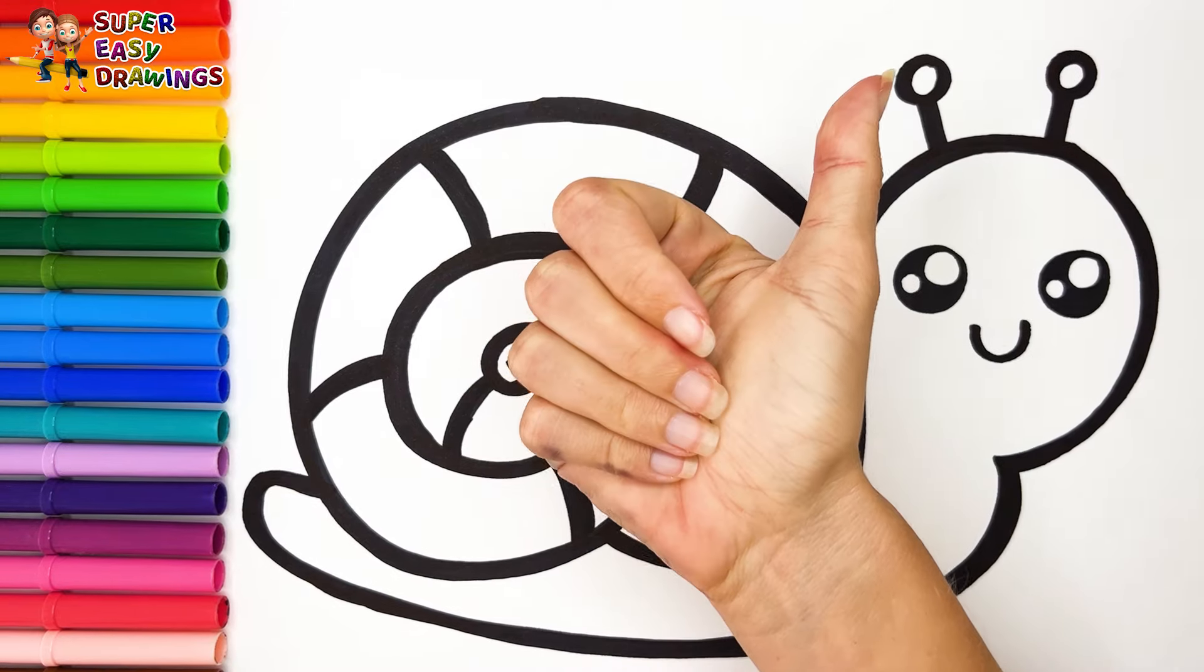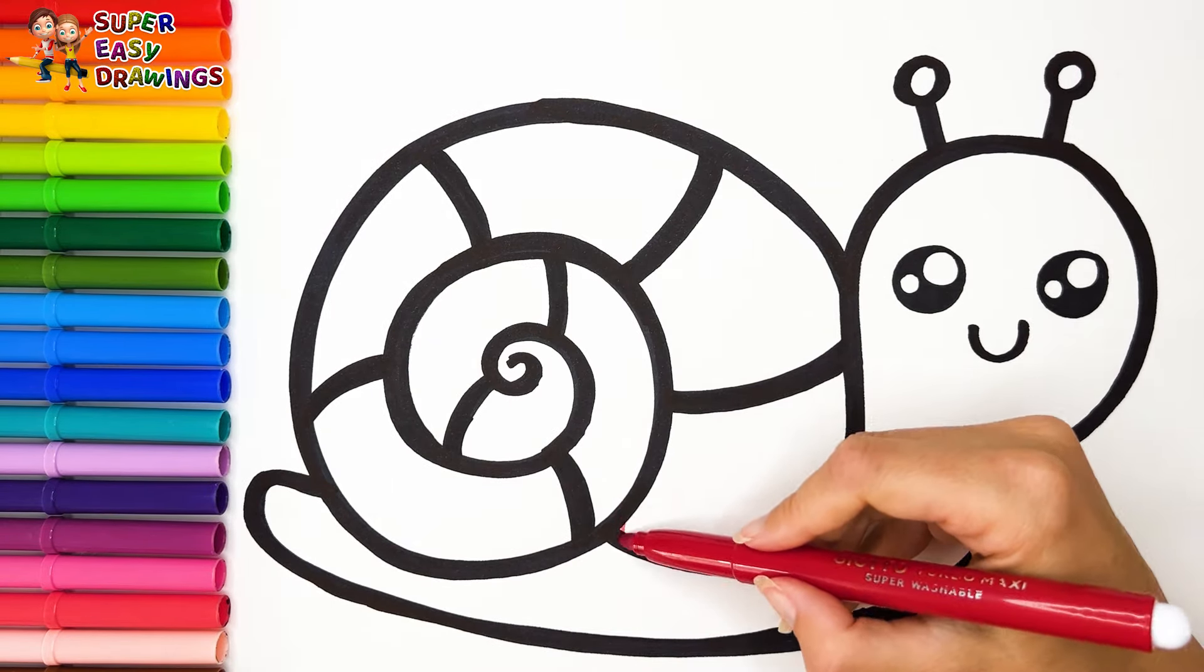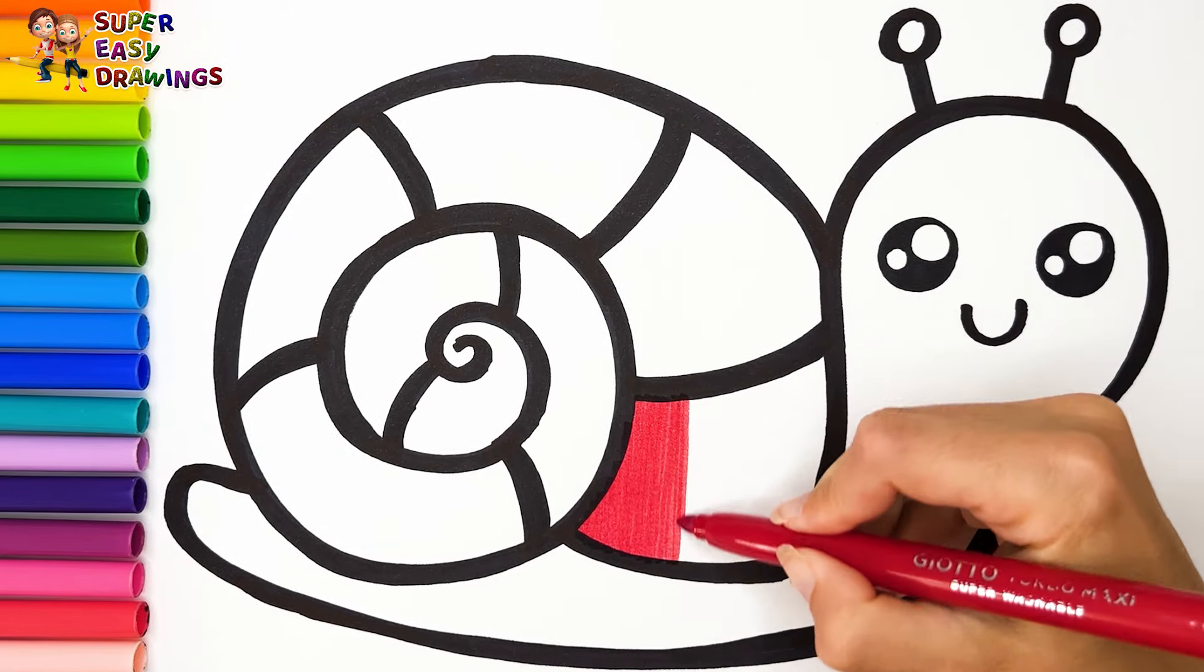Let's start coloring. I'm going to color our cute snail with the colors of the rainbow. I start with the color red here like this.